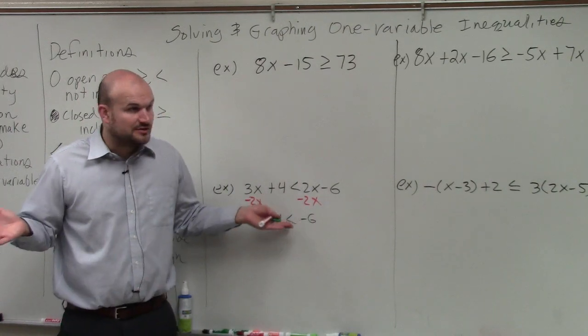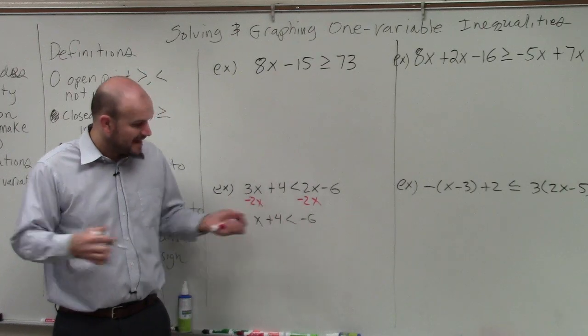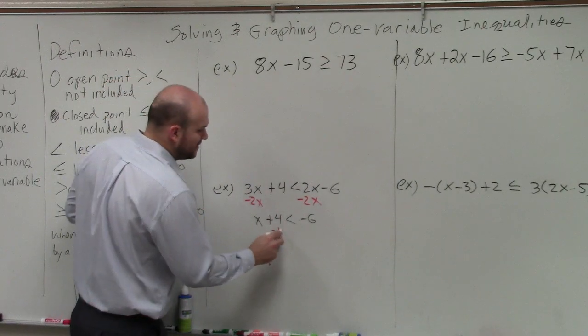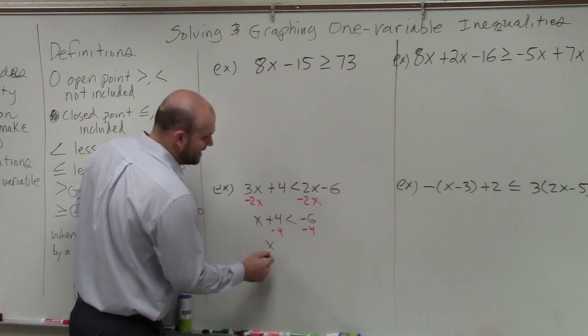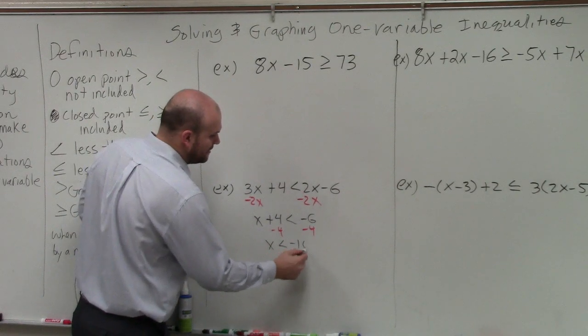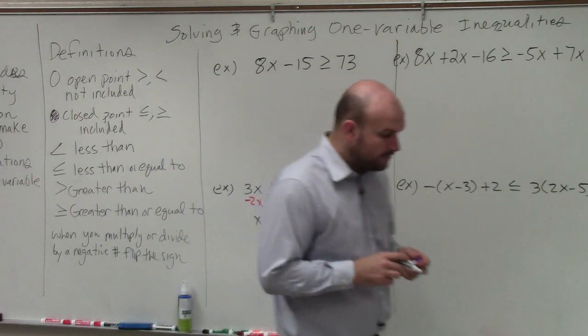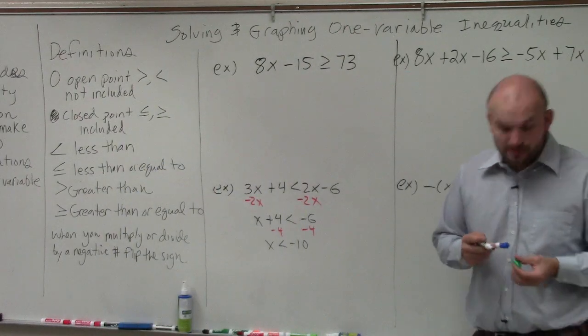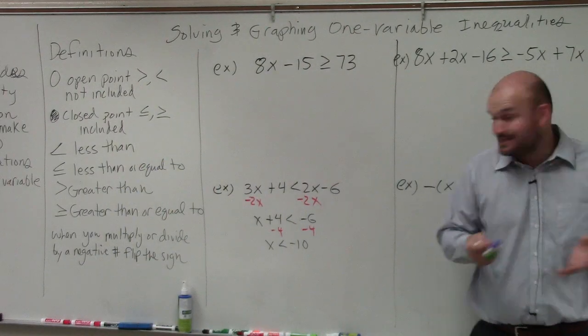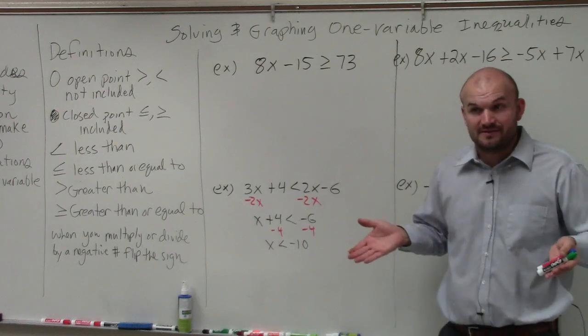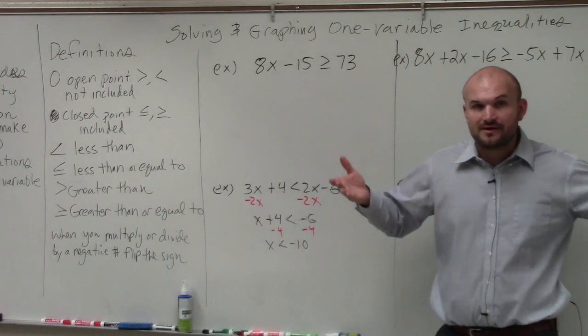Now we just, again, use our inverse operations. We see that our variable is being added by 4. So to undo that, I'm going to subtract the 4. And I now have x is going to be less than negative 10. Now what we need to do is represent our solution, because x does not equal negative 10. x is all the values that are less than negative 10. So we've got to think about what are those values that make that true.